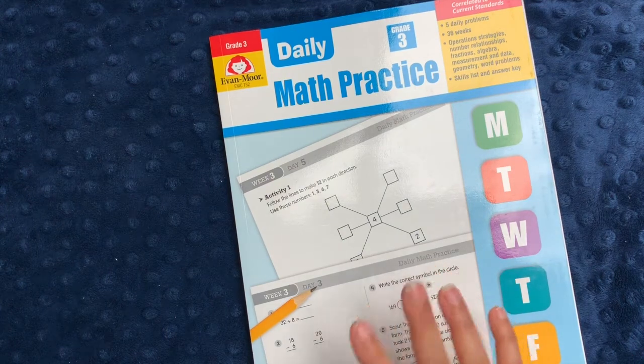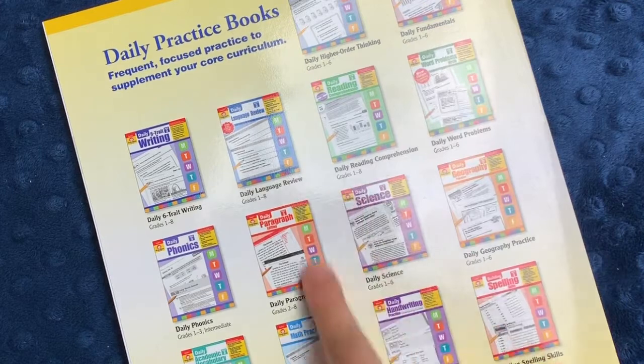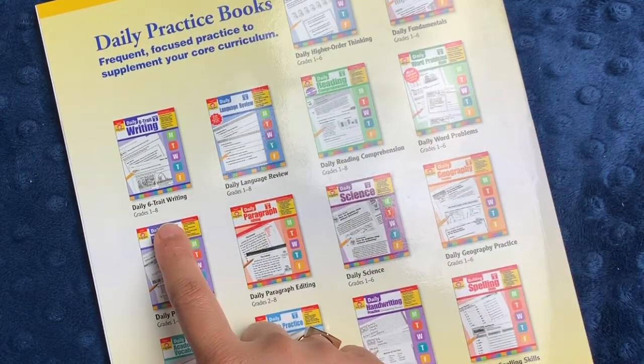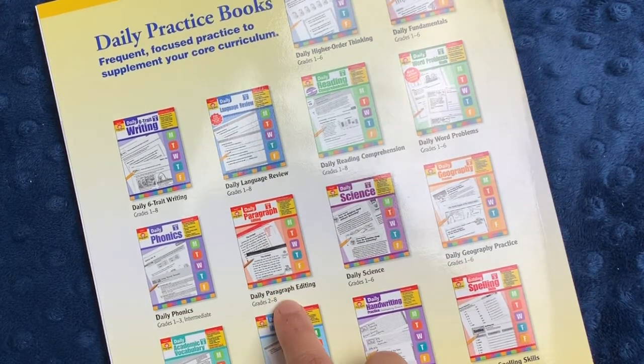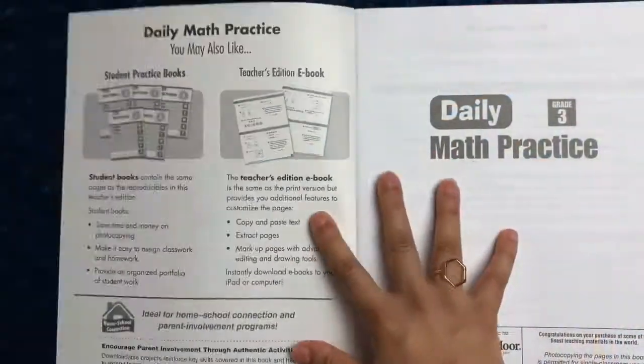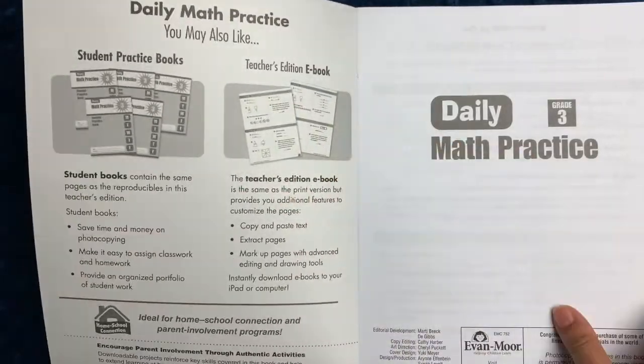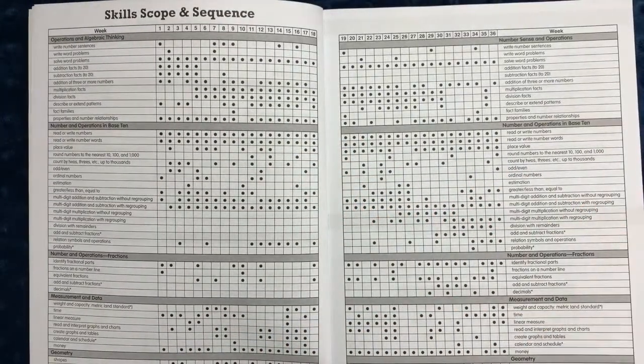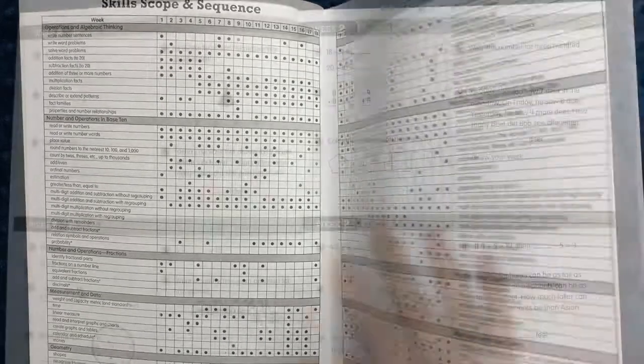This is Daily Math Practice for Grade 3, and this type of workbook is available in grades one through six from Evan Moore. The daily series has a lot of different topics—they have Daily Higher Order Thinking, Daily Fundamentals, Daily Six Trait Writing, Daily Language Review, etc. I particularly love Daily Paragraph Editing; my son loved doing this in second grade. The Daily Math Practice books are available in the student practice format as well as a teacher's edition ebook. Just as most of the other Evan Moore workbooks, you have a really clear skill scope and sequence here to follow.